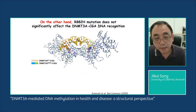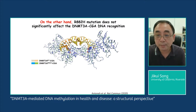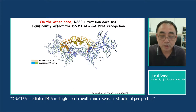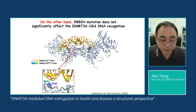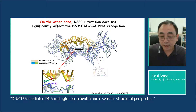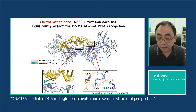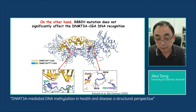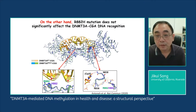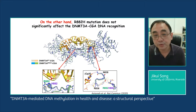On the other hand, we also solved the structure of this mutant with the CGA complex. In comparison with the wild-type DNMT3A-CGA complex, at the RD interface this mutant complex also shows slightly reduced protein-DNA contact. However, its CpG recognition is not compromised — it is almost the same as wild-type CpG recognition. This structural observation suggests that this mutant may not affect the CGA DNA substrate as much as it does the CGT complex.